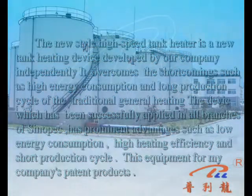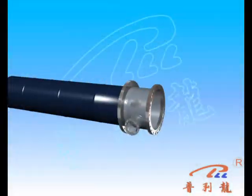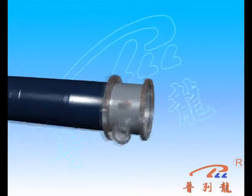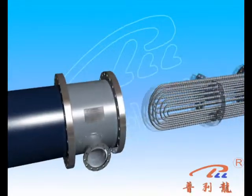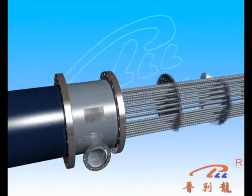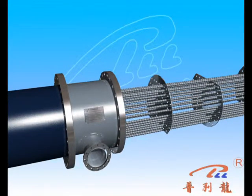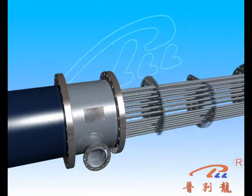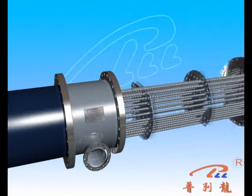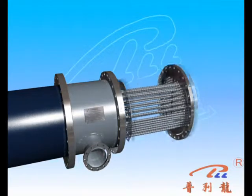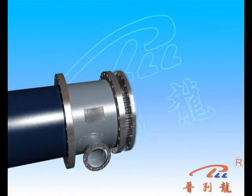A heat exchanger consists of a shell, shell flange, heat exchange tube, buffer plate, tube sheet, channel box, and disc components, etc.